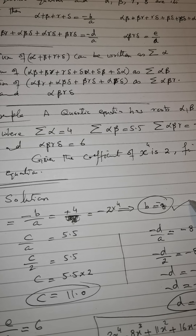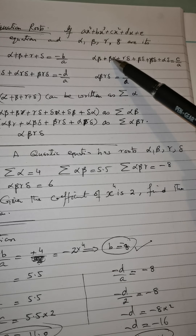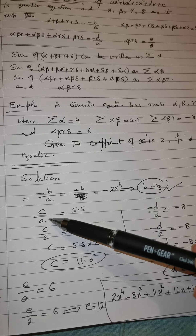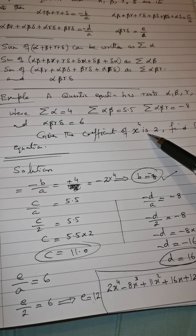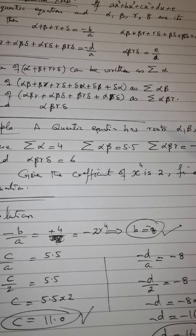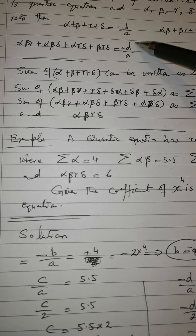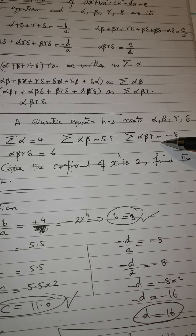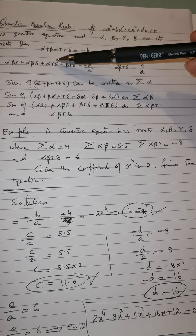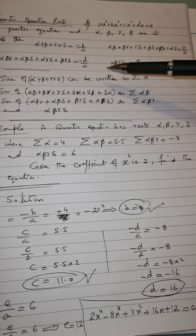Σαβ = c/a, and the given value is 5.5. Putting a = 2, we get c/2 = 5.5, so c = 11. Similarly, Σαβγ = −d/a. The given value is −8, so −d/2 = −8. We can verify: −d/a equals the summation of alpha·beta·gamma, which is −8. Putting a = 2, we get d = 16.